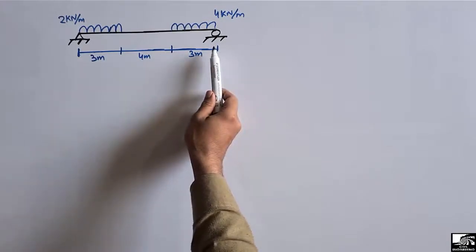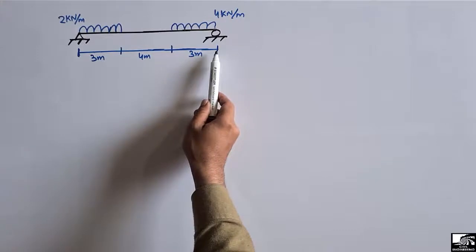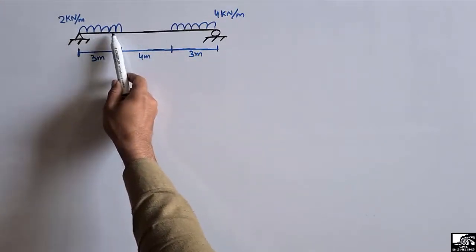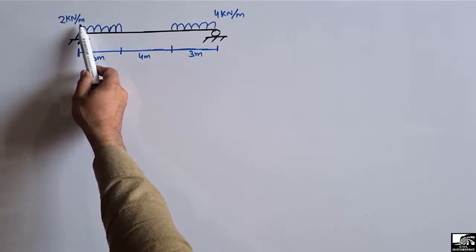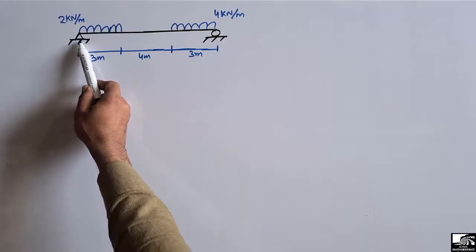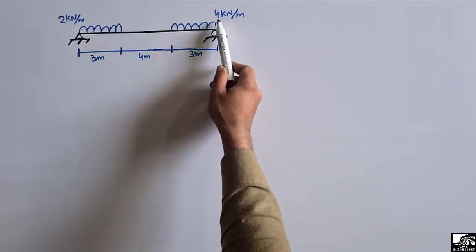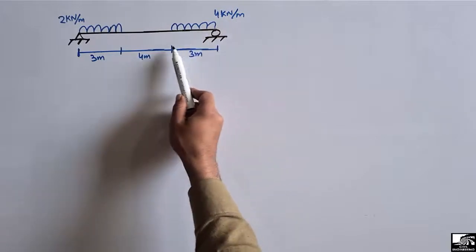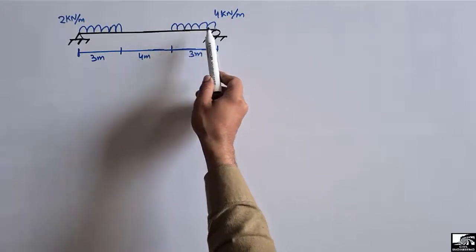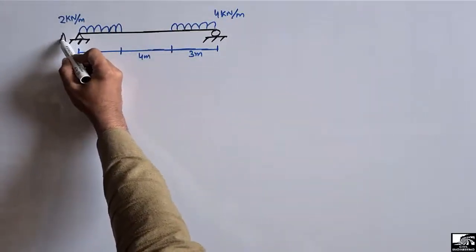This is a simply supported beam of total length 10 meters. There is a uniformly distributed load acting at one end of the beam with a magnitude of 2 kN per meter over a distance of 3 meters from the hinge support. The other load has a magnitude of 4 kN per meter, also distributed over 3 meters, acting at the other end of the beam.